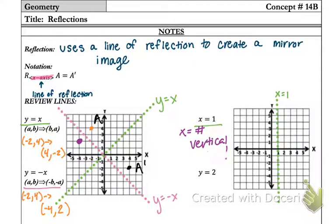I'm going to go ahead and erase that so you can see what I'm going to put here in a second. So x is a number is a vertical line. And then y equals a number will be a horizontal line. y equals a number is horizontal through that number.